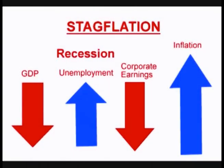The next term worth mentioning is stagflation. Stagflation occurs when there is slow economic growth, known as stagnation, at the same time as inflation. So the economy is doing poorly, meaning spending is down — which should be causing prices to drop like in deflation — but instead prices are rising, usually caused by some sort of supply shock. For instance, an example of stagflation was in the 1970s when oil prices rose during a recession.